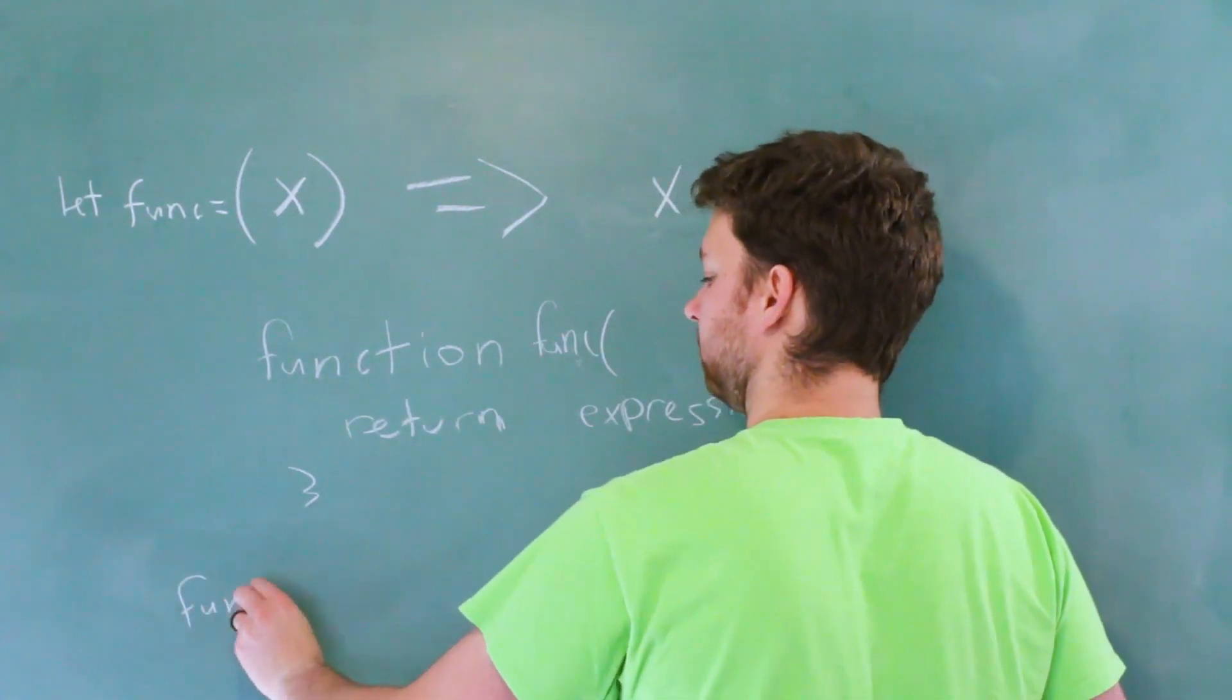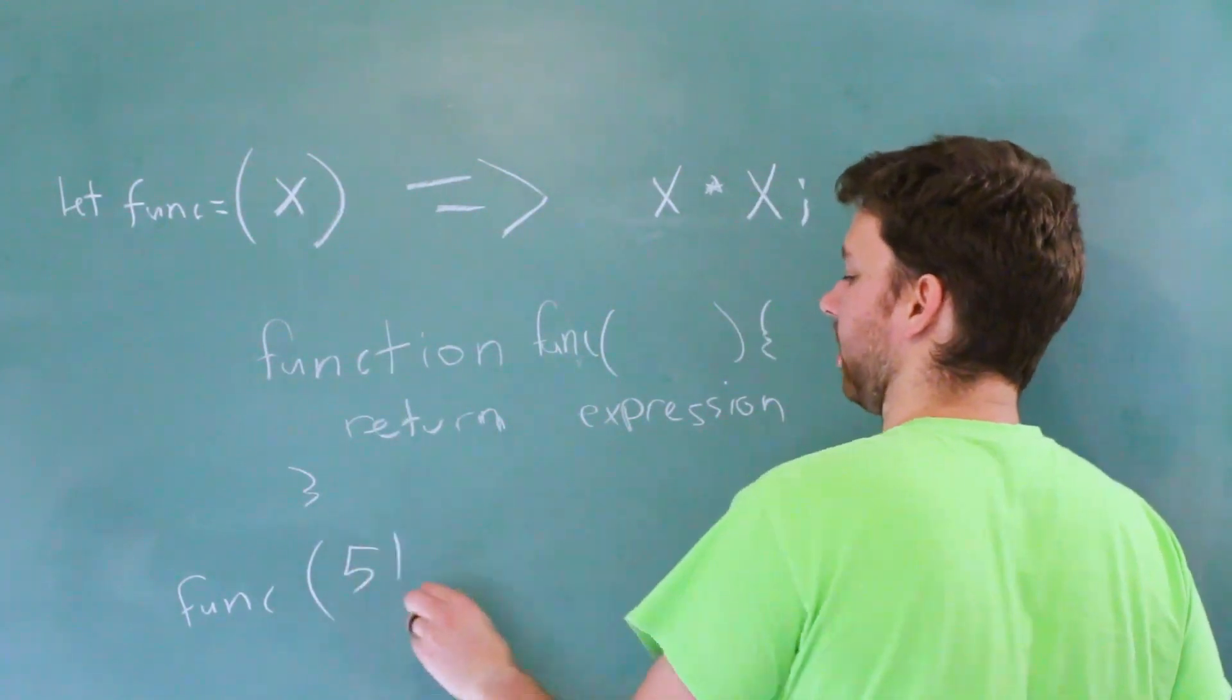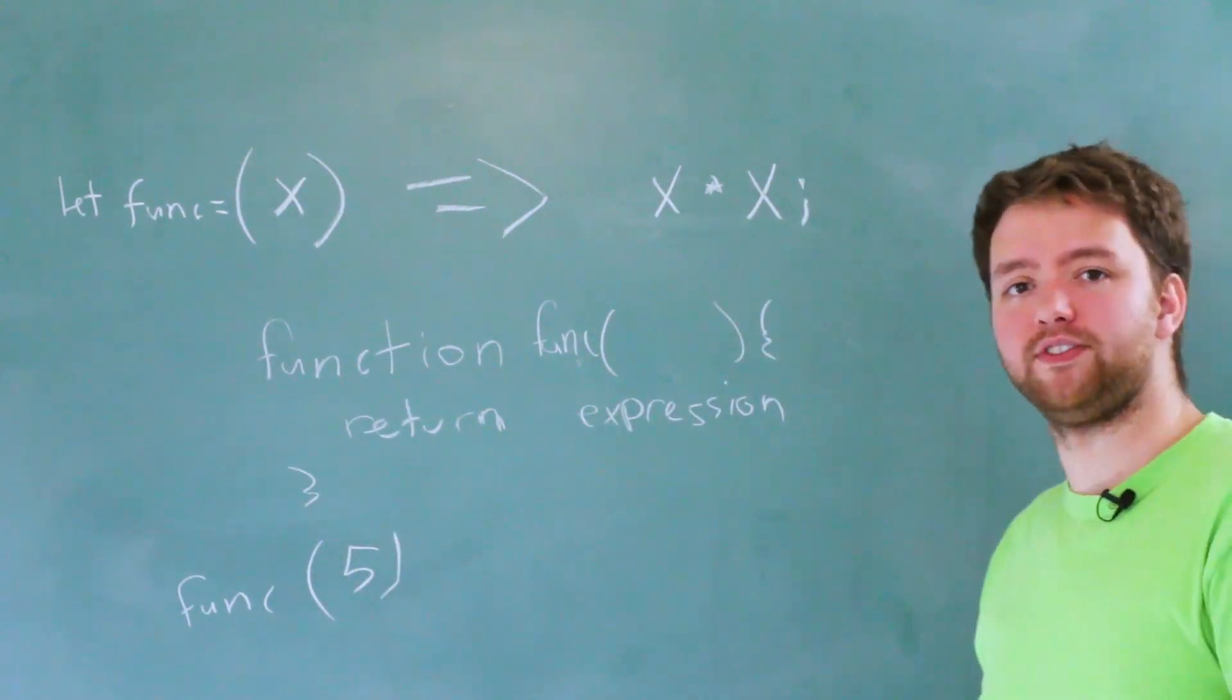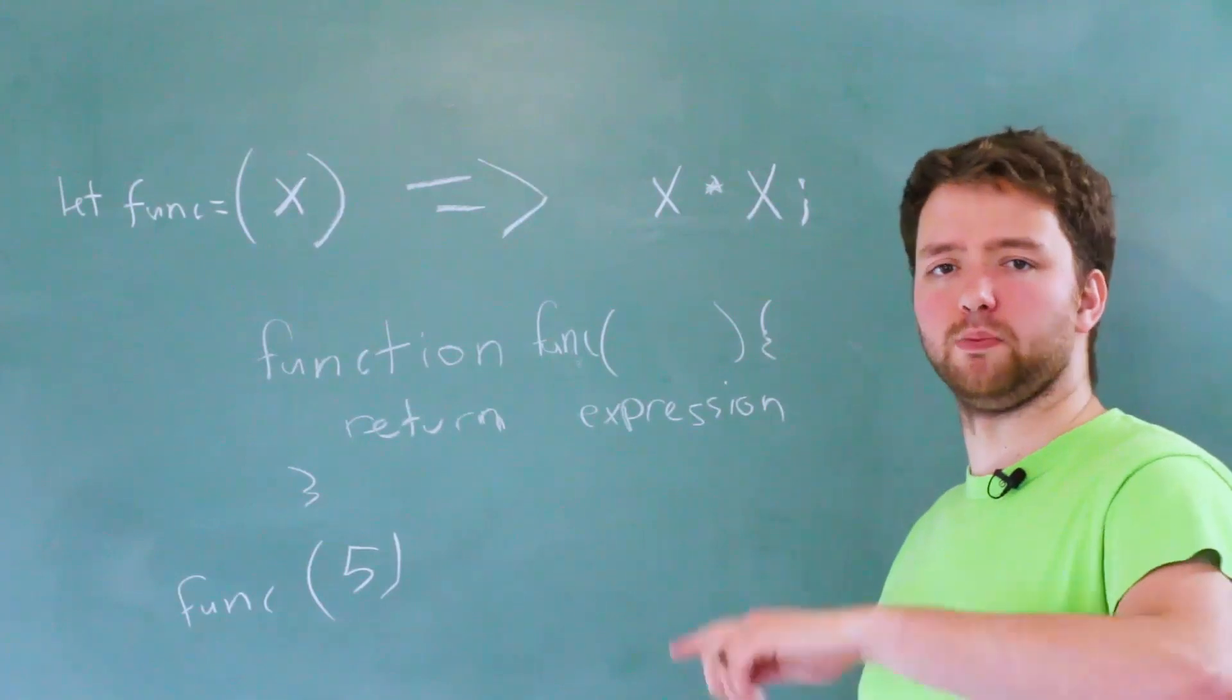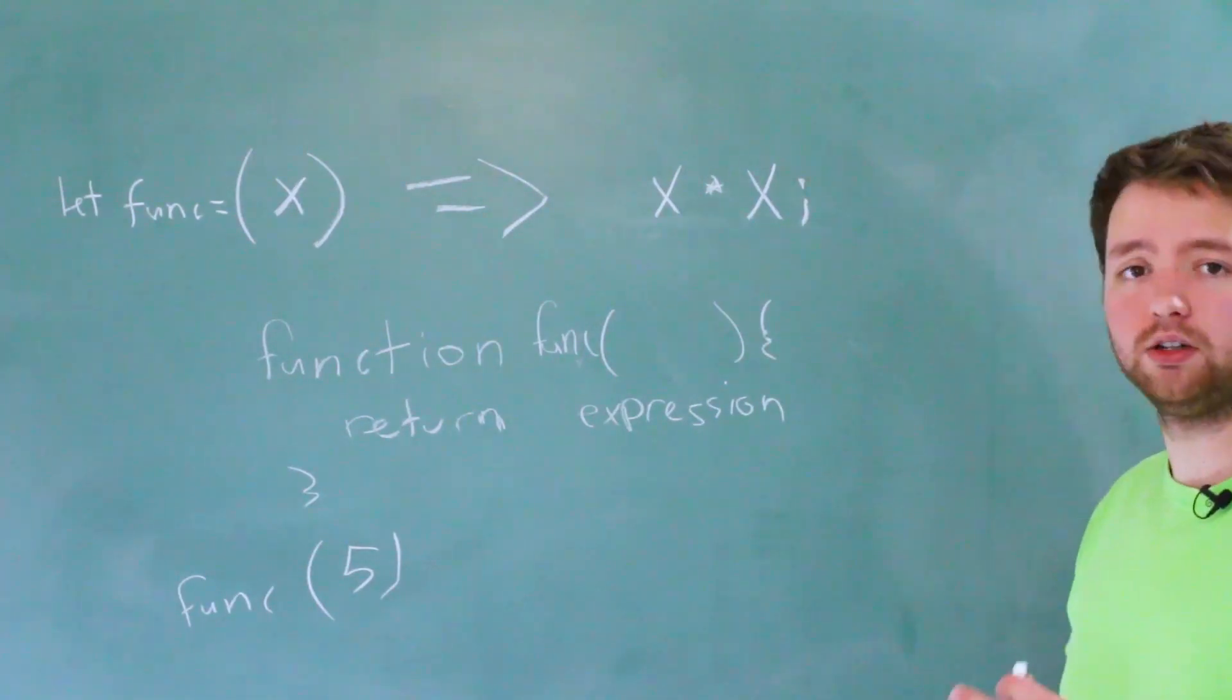And we would pass in some number such as five—that's going to give us the value 25, which we could then console log or pass into another function or whatever.